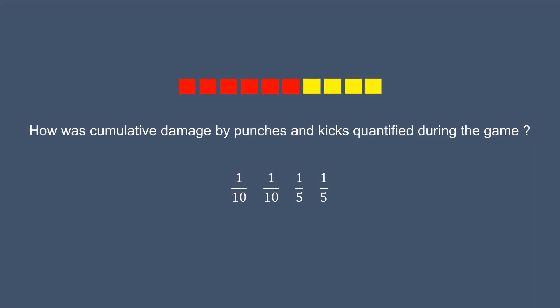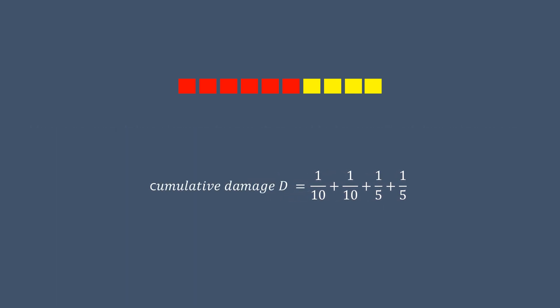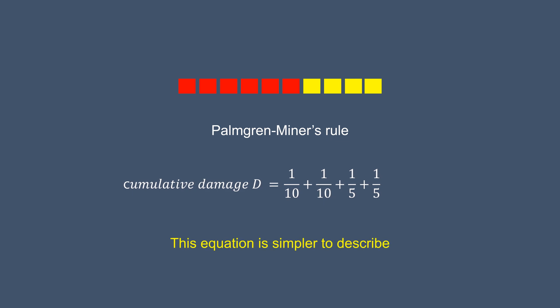How was cumulative damage by punches and kicks quantified during the game? Yes, just added one by one. Like this. If organized by damage levels, it is the Palmgren-Miner's rule. Note, this equation is simpler to describe.